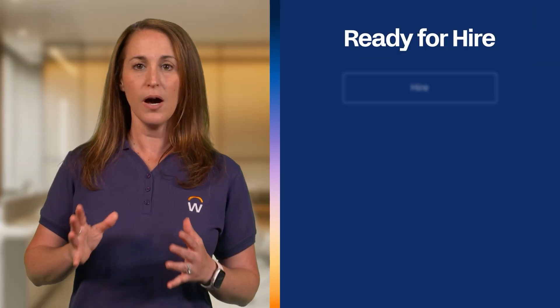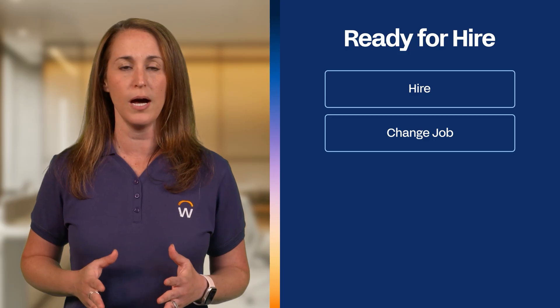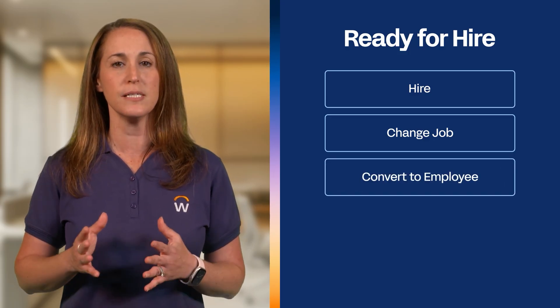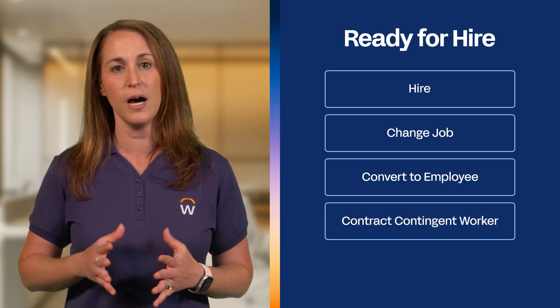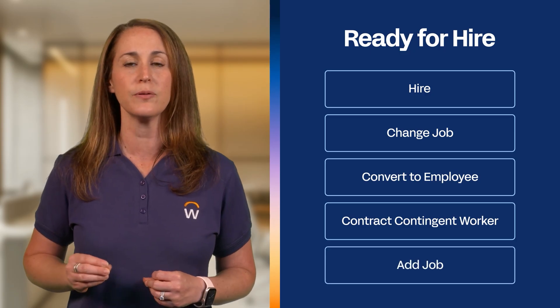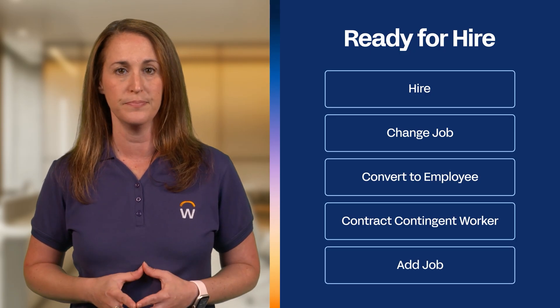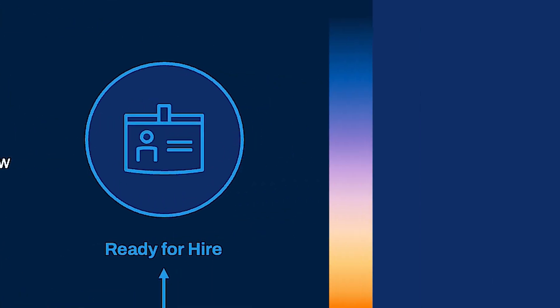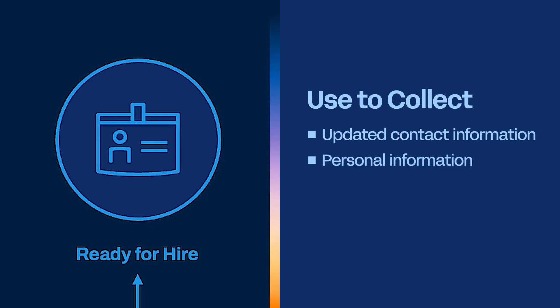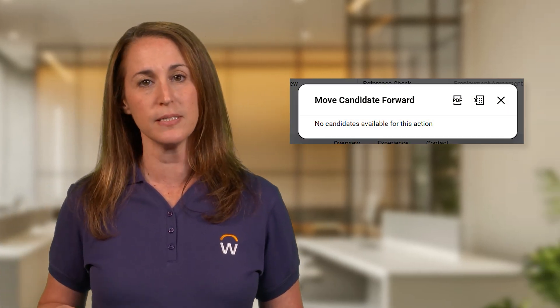Once you've found the perfect candidate, there's one final stage: ready for hire. Think of the ready for hire business process as the bridge between the application process and the following staffing events: the hire employee event for external hires, the change job event for internal hires, the convert to employee event that converts contingent workers to employees, the contract contingent worker event to hire contingent workers, and the add job event where you can add an additional job to an existing worker's profile. Ready for hire is always the last step and serves as a completion step. You can use this step to collect updated contact information, personal information, or additional documents that support hiring or onboarding. After moving a candidate to this step, you can no longer disposition them — attempting to use the move forward or decline buttons results in an error message.